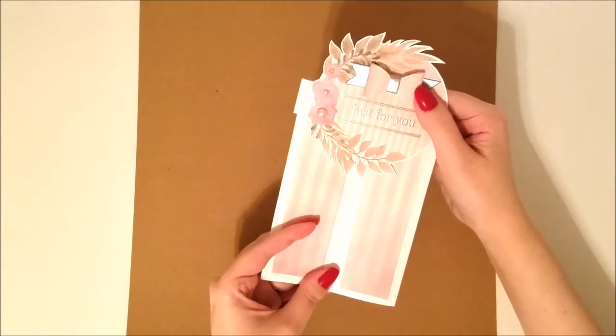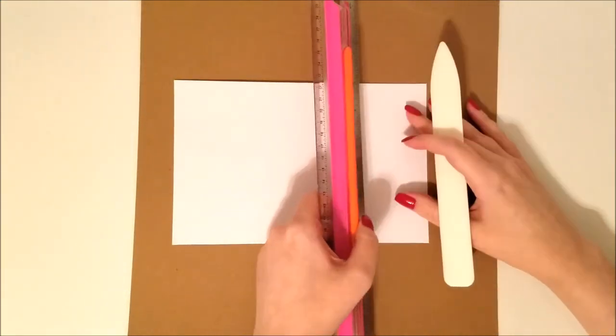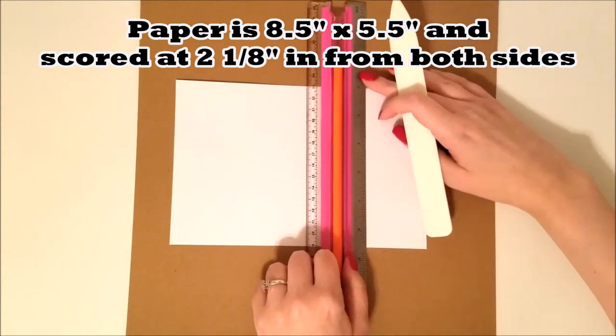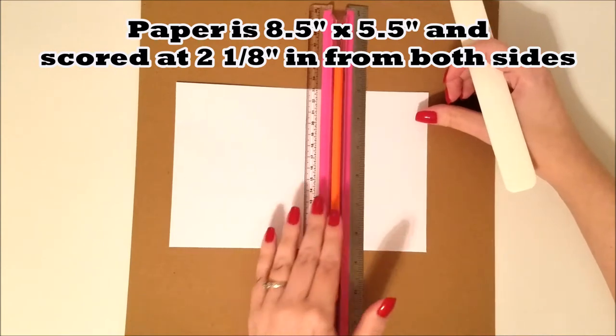So I'm going to begin with my card base and this is just a piece of white cardstock. I have it cut at 8.5 by 5.5 inches and I'm going to score it at 2 and 1/8 inch in from both sides.